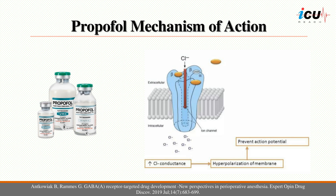Propofol is an anesthetic agent prepared in lipid emulsion. Its formulation contains soybean oil, glycerol, egg lecithin, and a small amount of the preservative EDTA. Propofol binds to GABA, glycine, nicotinic, and M1 muscarinic receptors. Like most general anesthetic agents, the mechanism of action for propofol is poorly understood but thought to be related to the effects on GABA-mediated chloride channels in the brain. Propofol may work by decreasing the dissociation of GABA from GABA receptors, potentiating the inhibitory effects of the neurotransmitter.